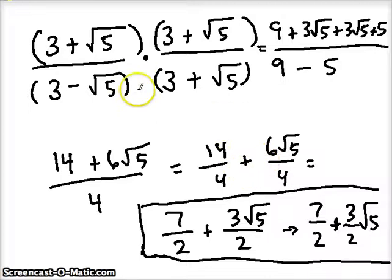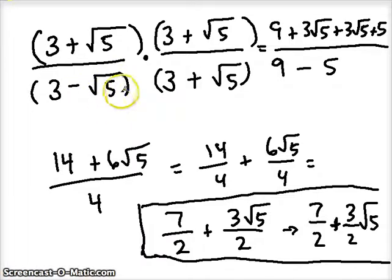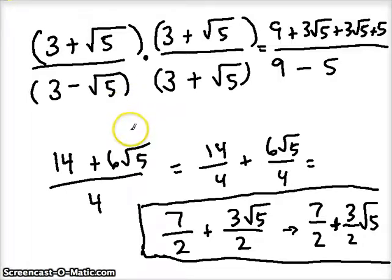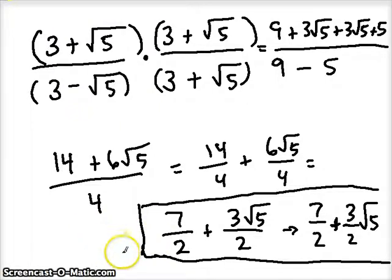Anytime we need to divide things with radicals, use that conjugate trick. If it's only one term, you could use a rationalizing trick — and multiplying by the conjugate is essentially a type of rationalizing. Good luck multiplying and dividing radicals. In the next video, we're going to use everything we've been talking about: multiplying, dividing, adding, subtracting, and simplifying — all so that we can solve equations using radicals of any nth term.